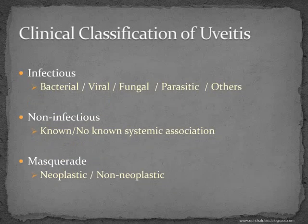So that was the anatomical classification of uveitis. As mentioned, this does not give us an idea of what is causing the uveitis — it just says where the uveitis is located. The clinical classification explains the cause of uveitis and will definitely help us in treatment.